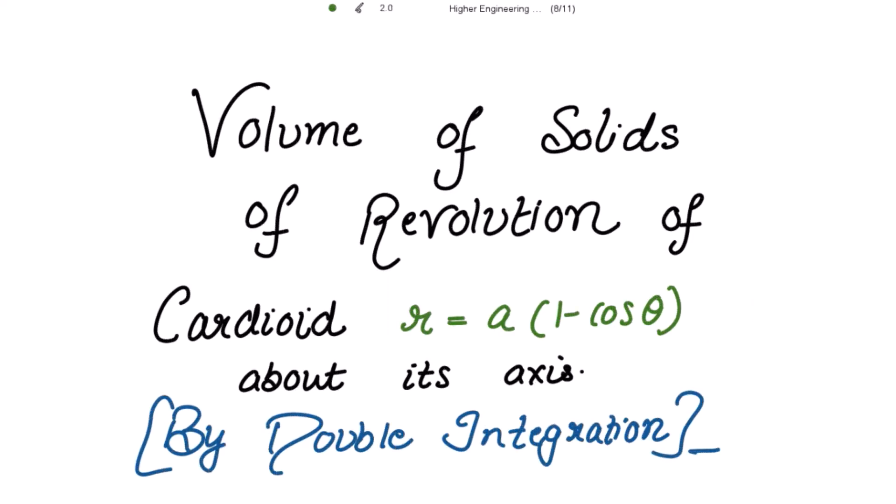We need to find the volume generated by the revolution of the cardioid r equal to a into 1 minus cos theta about its axis by double integration.